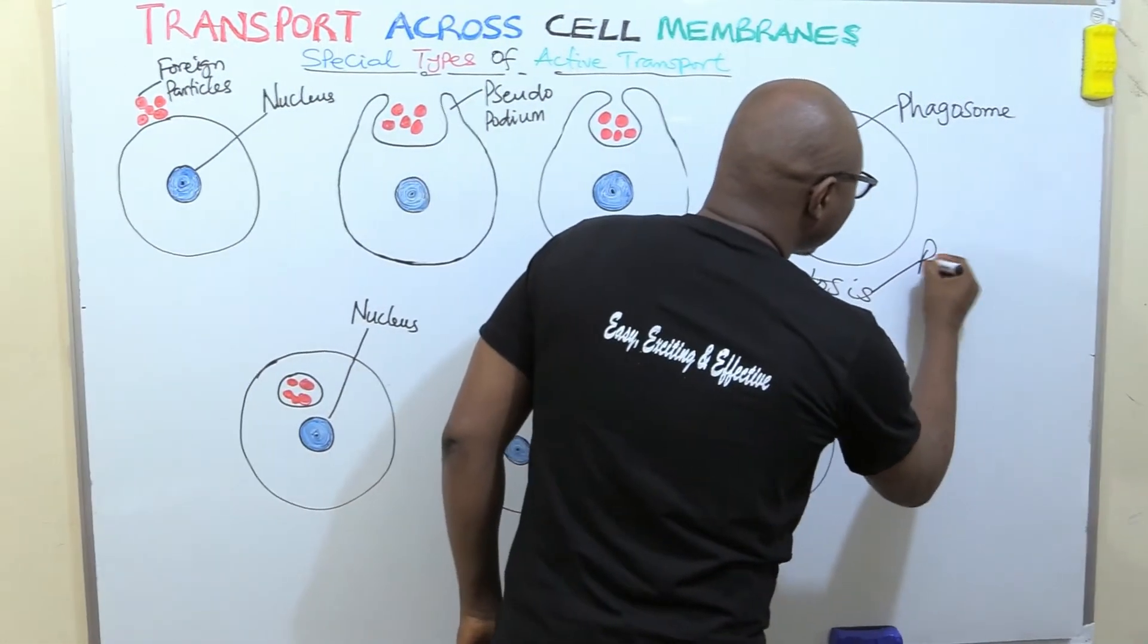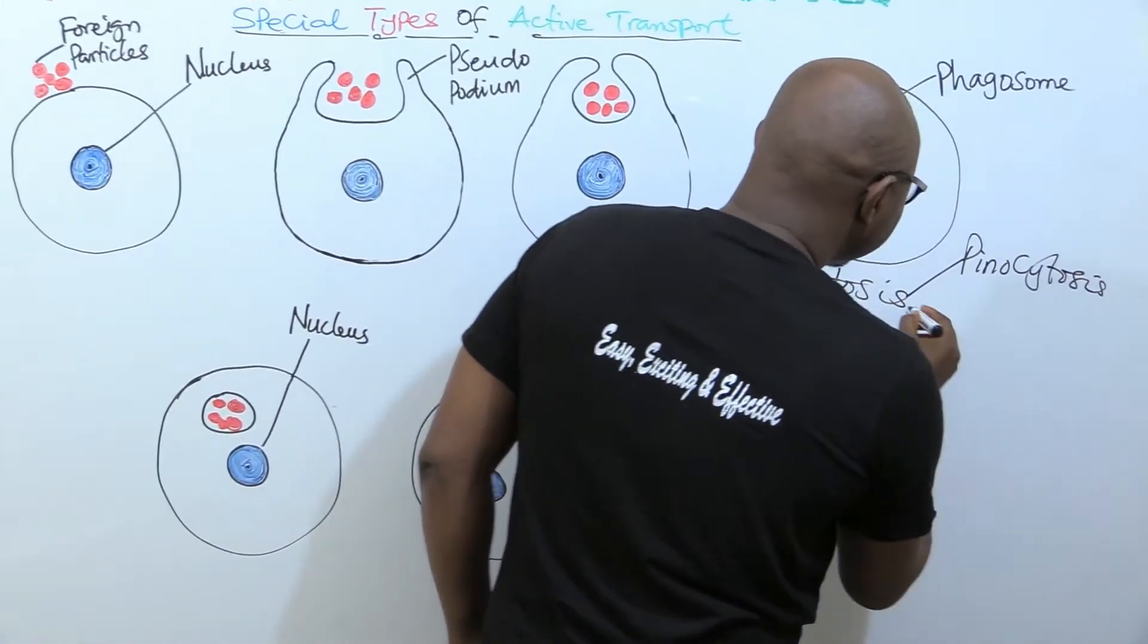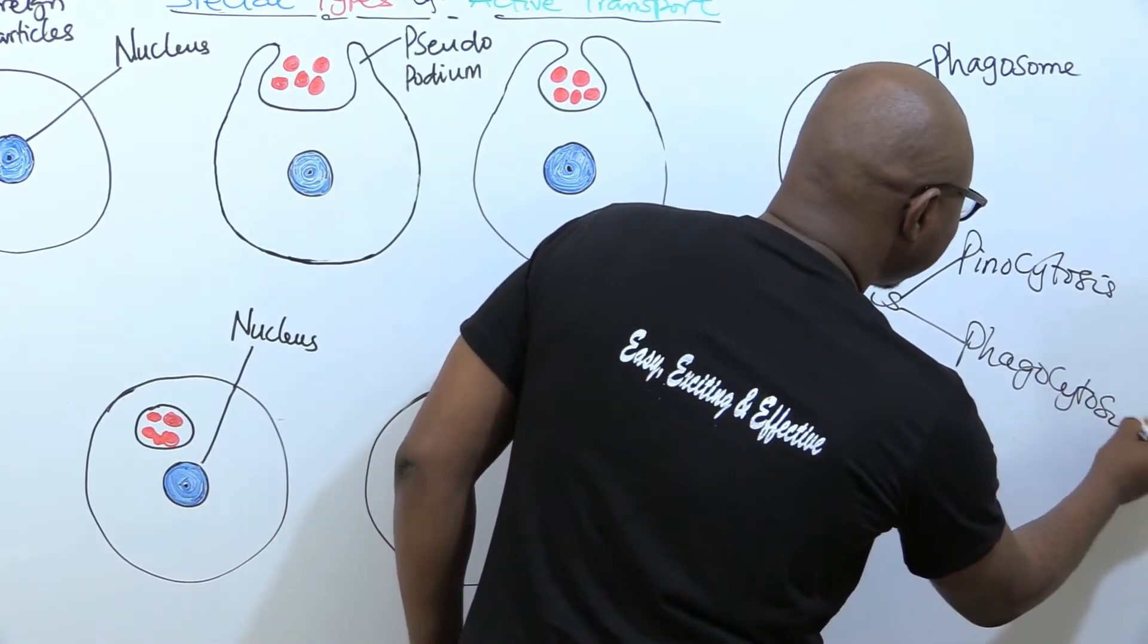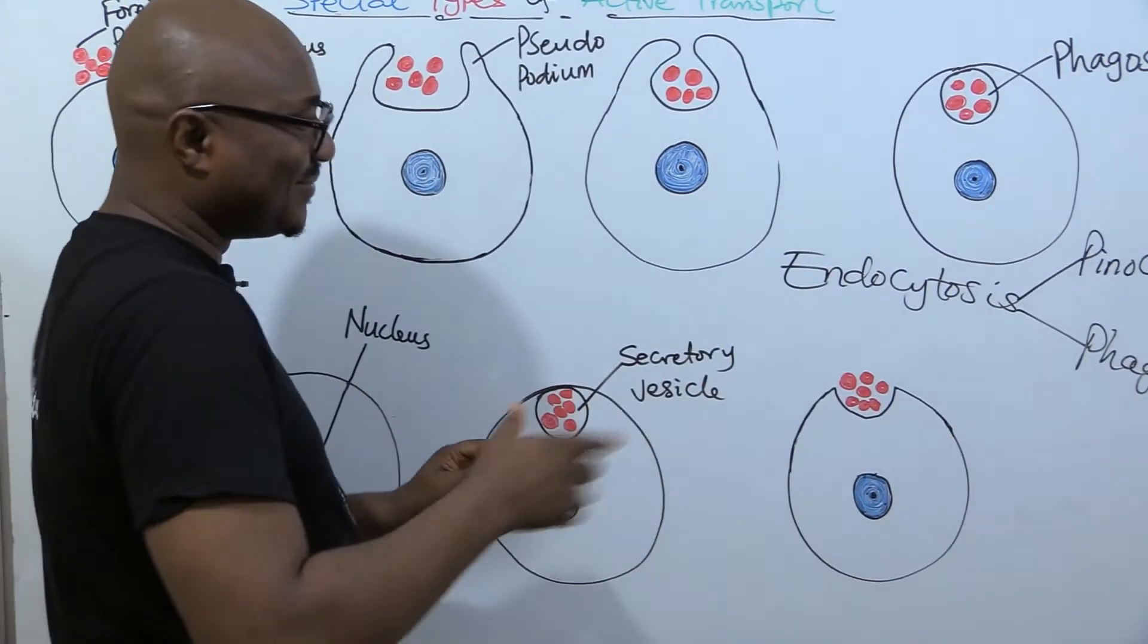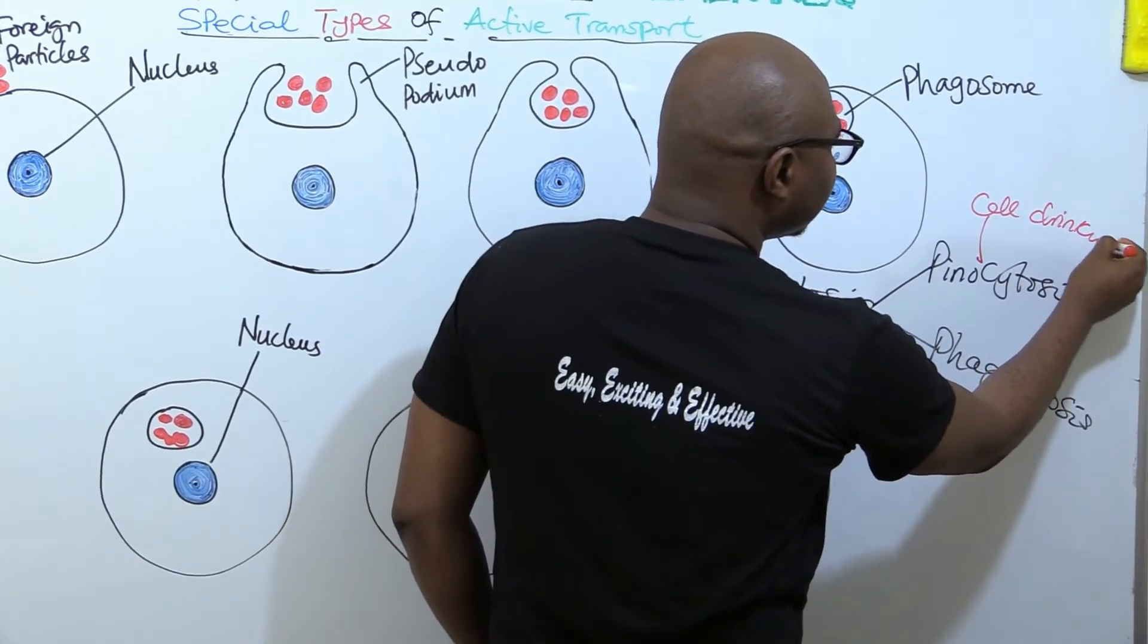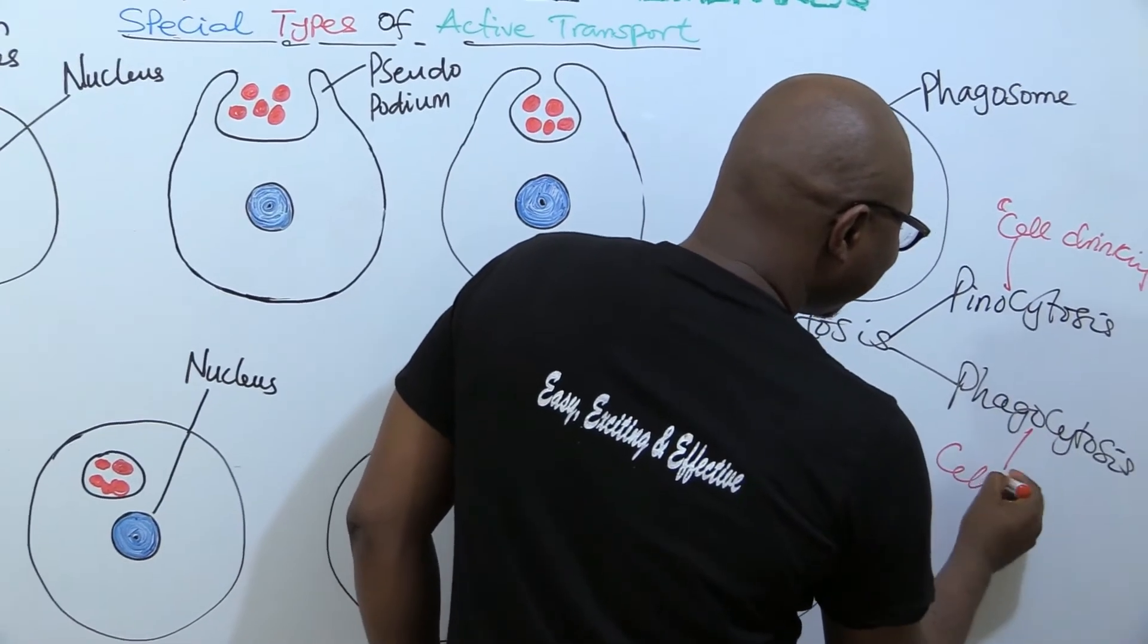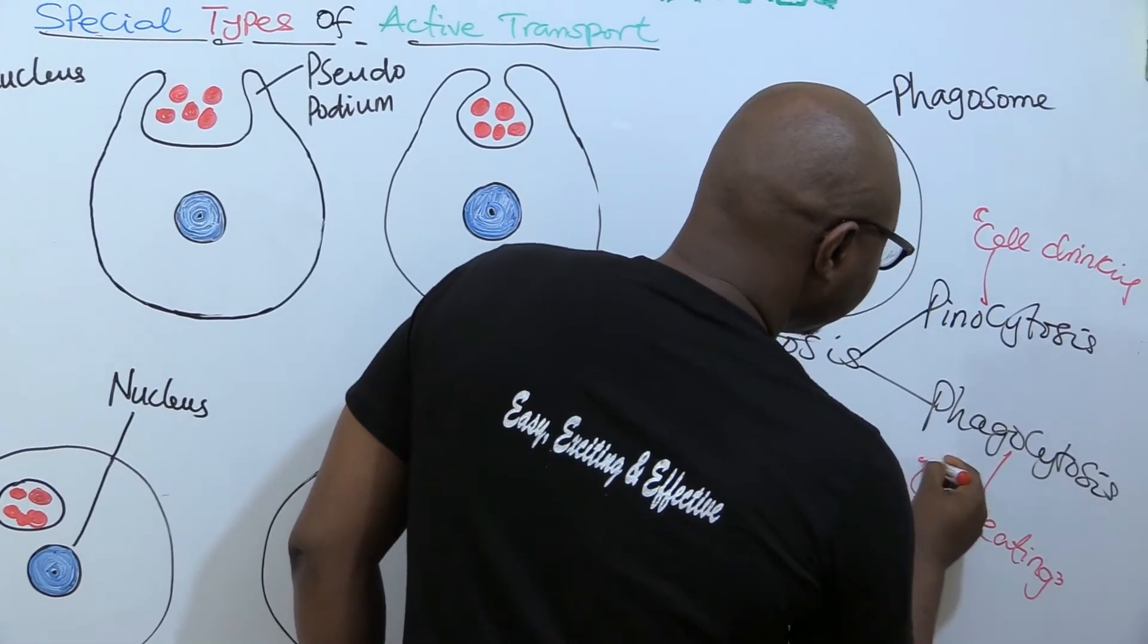There is no carrier protein or channel proteins that they can fit into. They are too large. That's why the cell has devised this very special mechanism for taking these substances in. So endocytosis is further divided into two: pinocytosis and phagocytosis. They have nicknames. Pinocytosis is cell drinking, and phagocytosis is known as cell eating.